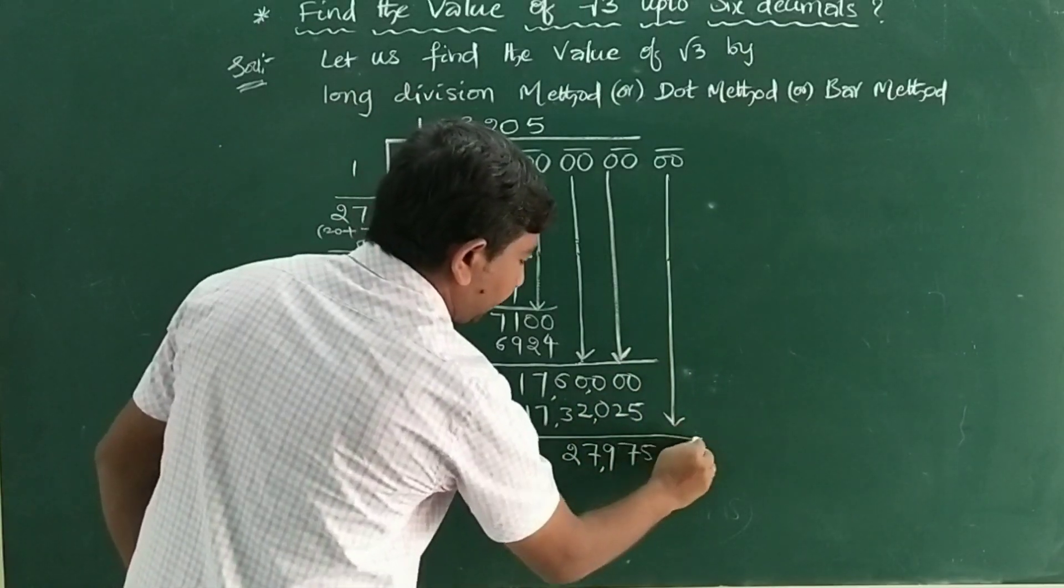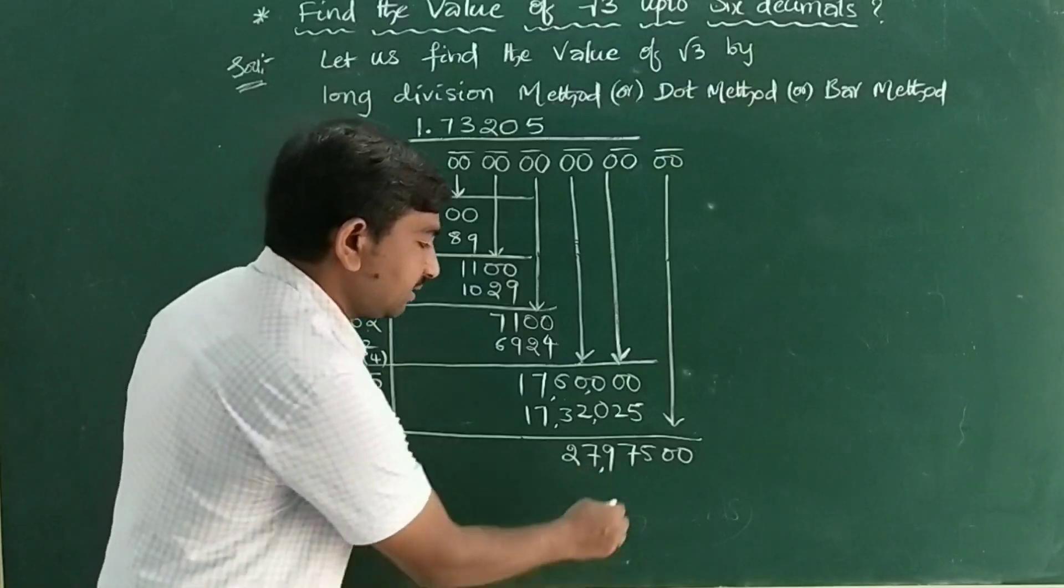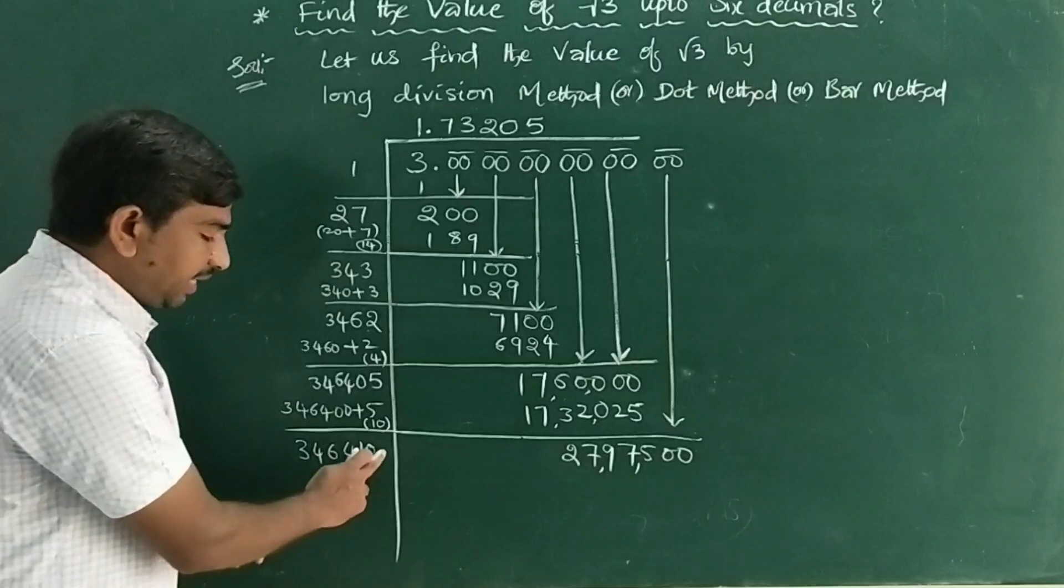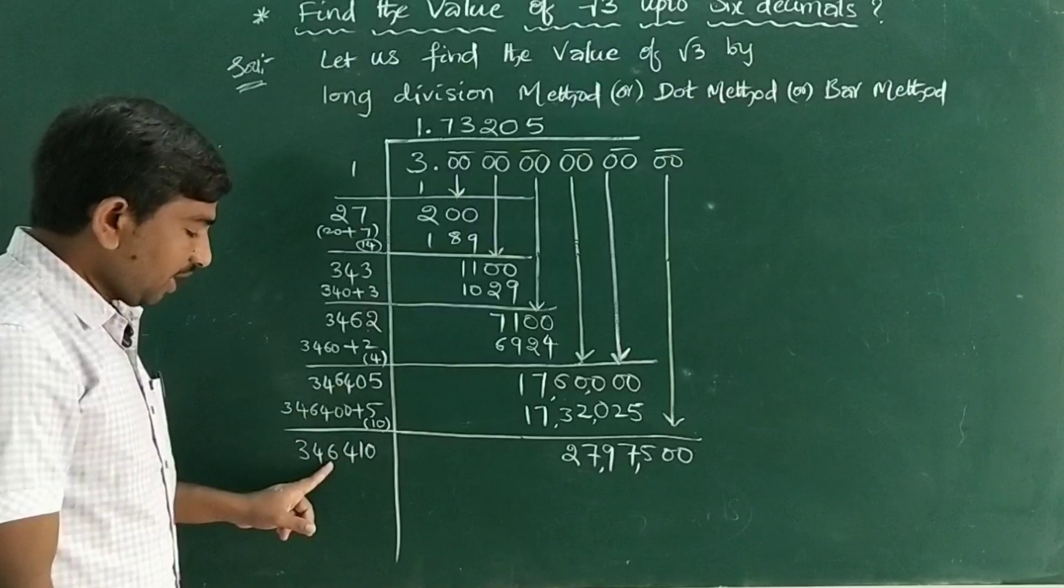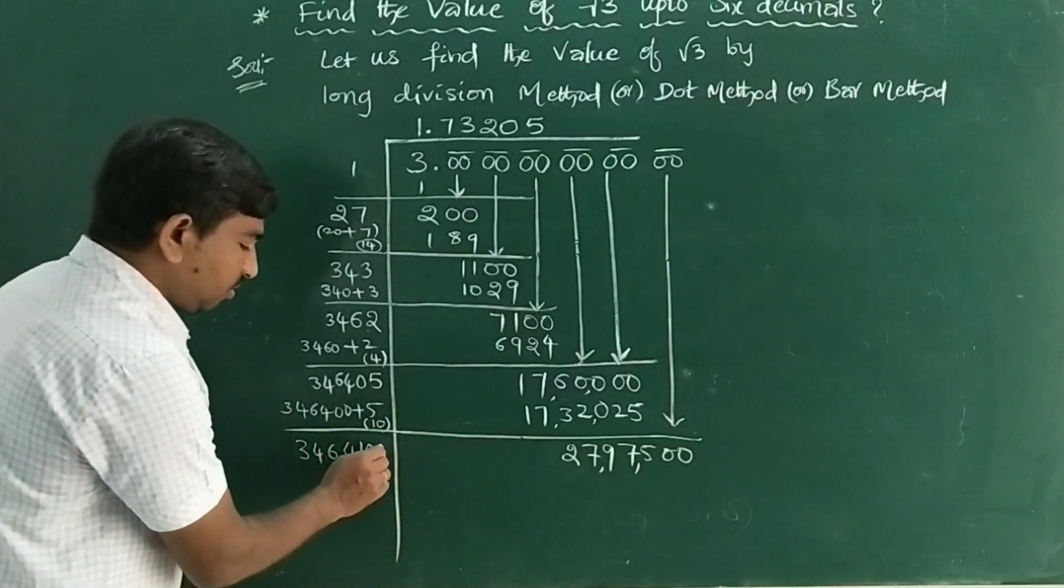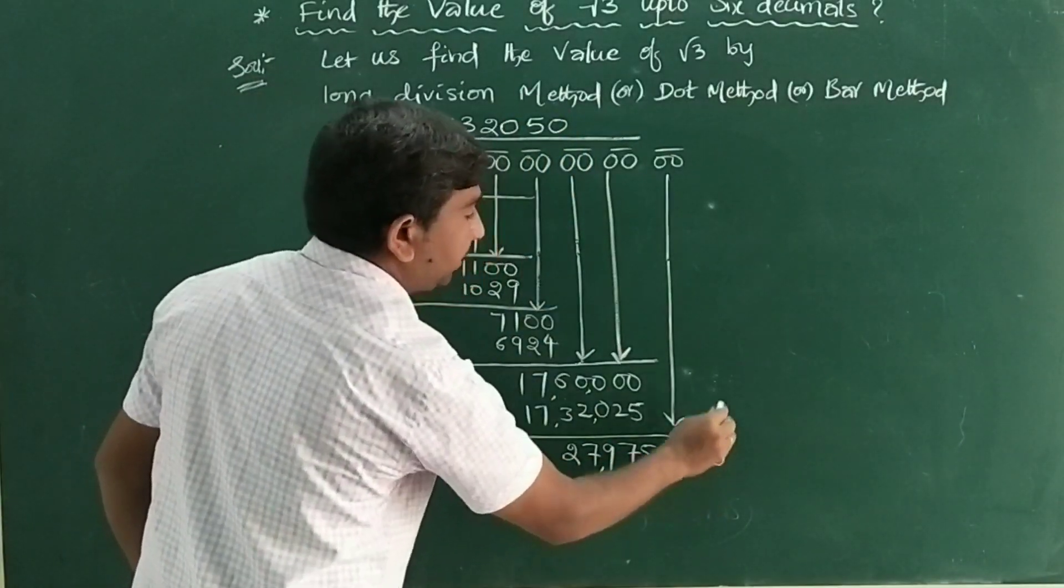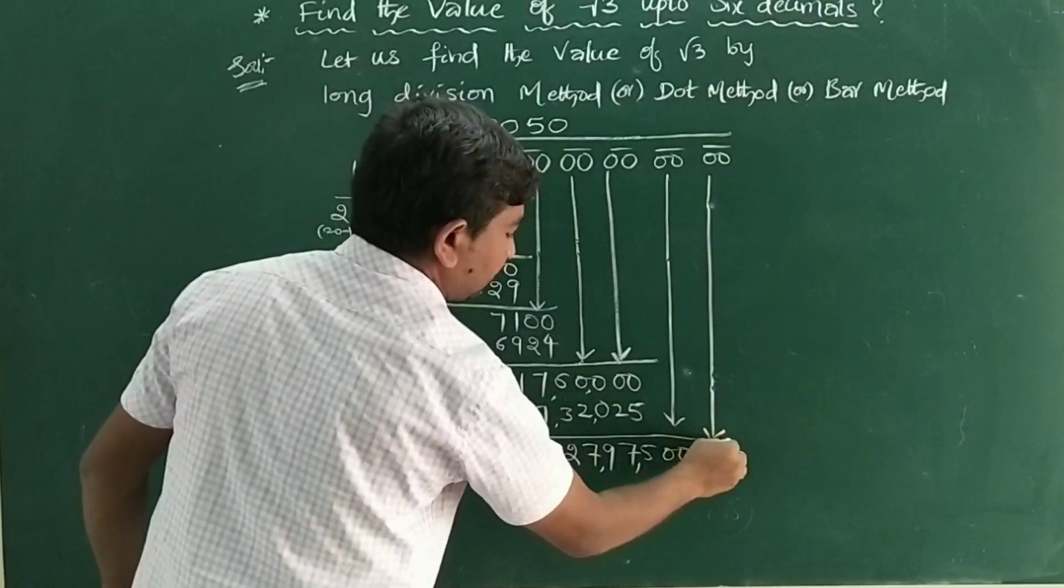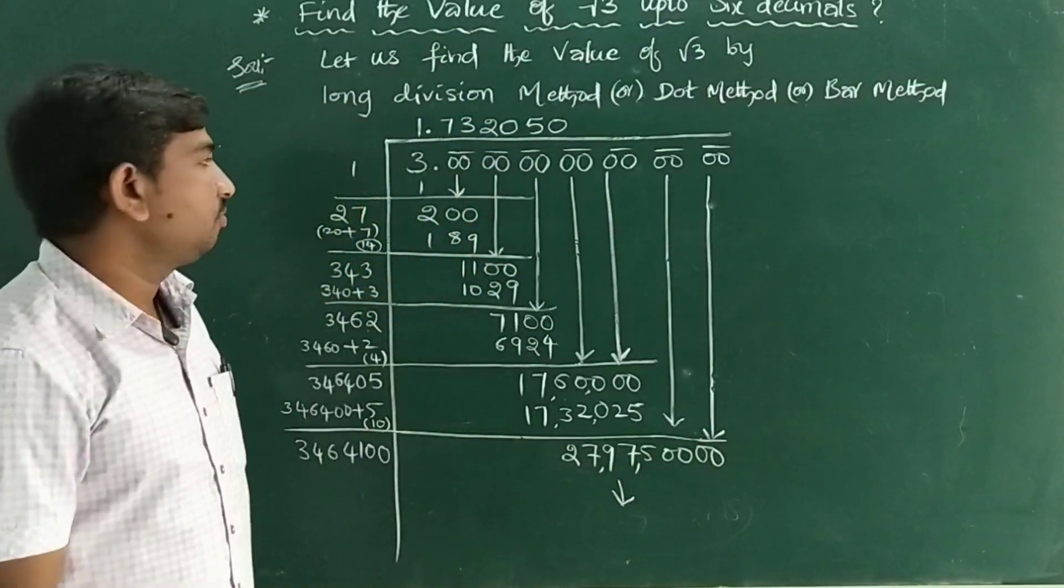Write double zeros. It becomes 27,97,500. If you write any number here, it becomes 3,46,410-something, which is more than our value. So again, keep 0 here. And again, take one more 0 and one more pair. This is the process we have to do. I hope you understand.